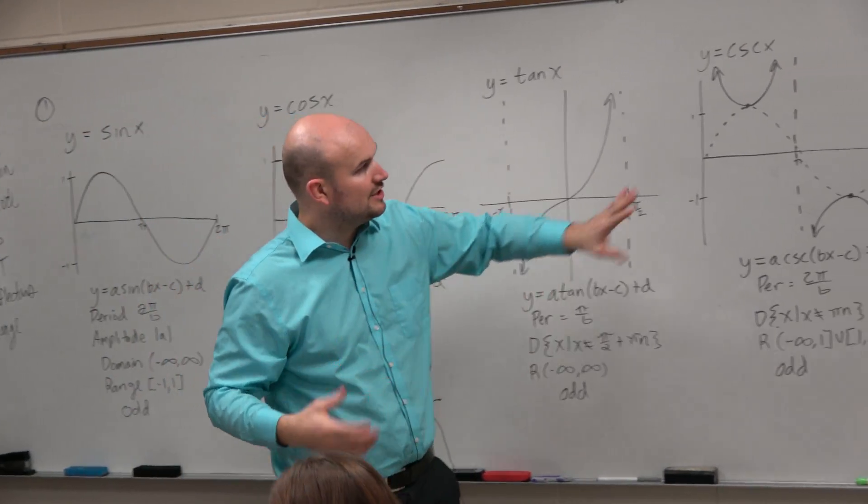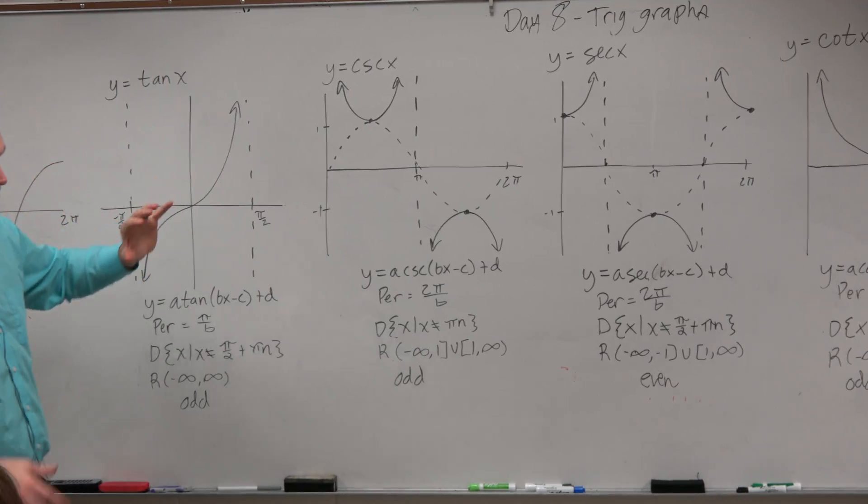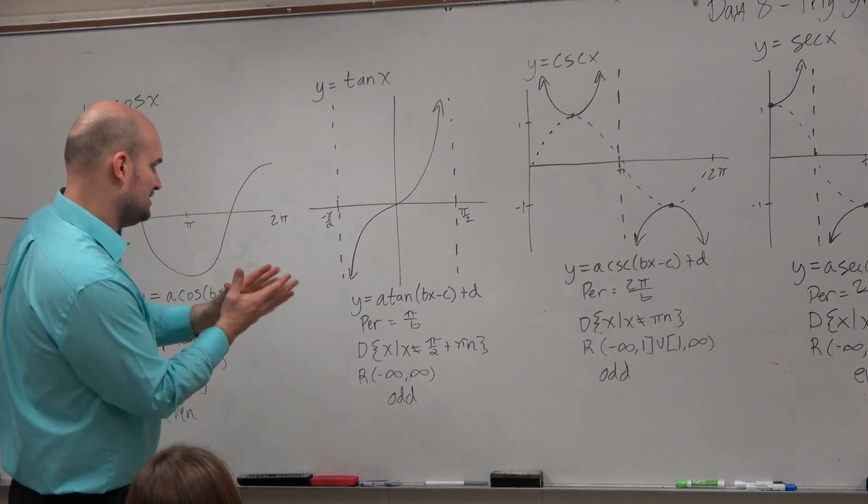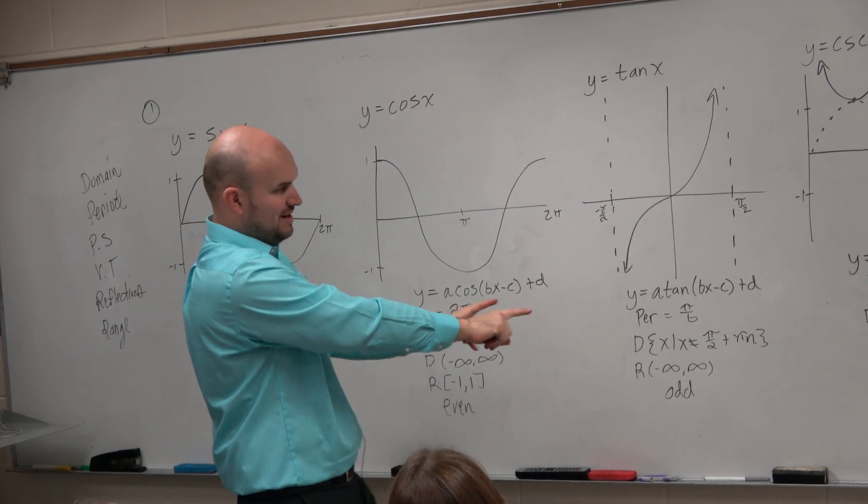And then, obviously, returning, we went over cosecant, secant, and cotangent. So there's a couple things I want you guys to kind of recognize with all these graphs. Notice that of each of the parent functions, the equations, and then I graph them with the transformations.